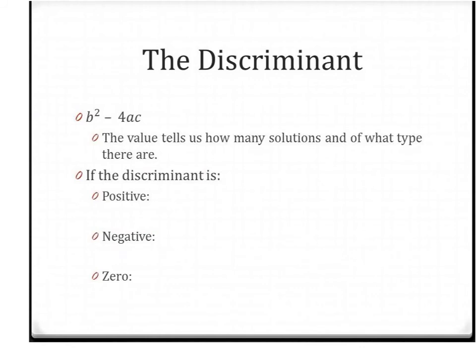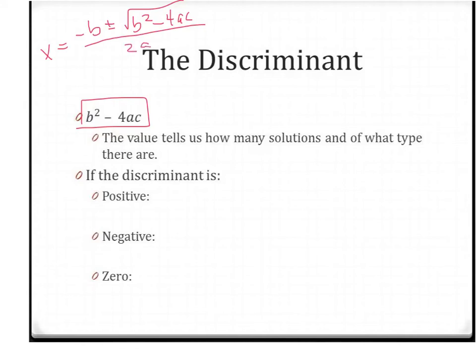The last thing we want to discuss is the discriminant, and you'll recognize this as the part under the square root. If I wrote out my quadratic formula — negative b plus or minus the square root of b squared minus 4ac, all over 2a — this part under the square root is called the discriminant. By the way, the part out front, negative b over 2a, is your formula for your axis of symmetry.